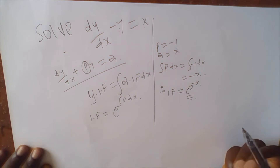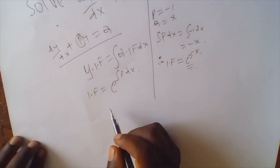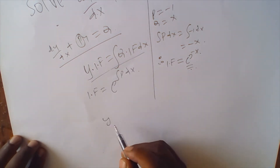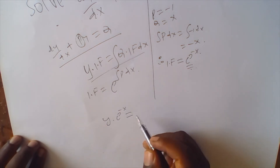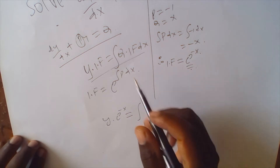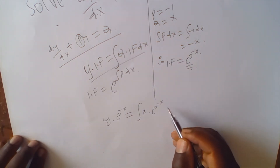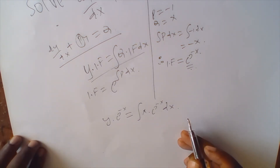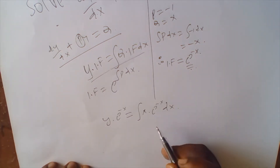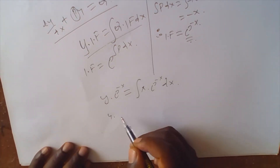Once we have the integrating factor, the solution is given by y times the integrating factor. So we have y times e to the negative x equals the integral of Q, which is 2x, times the integrating factor e to the negative x, dx.